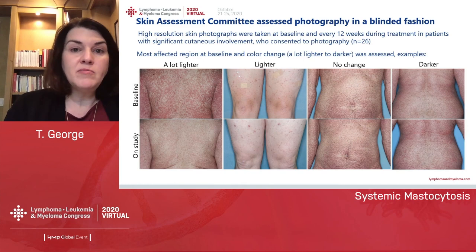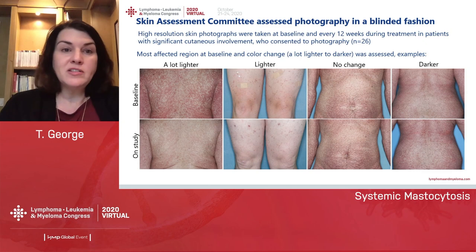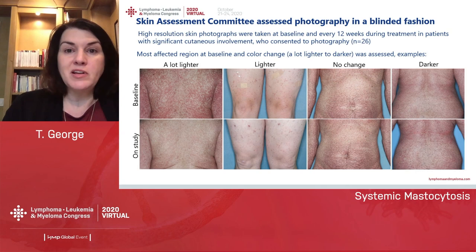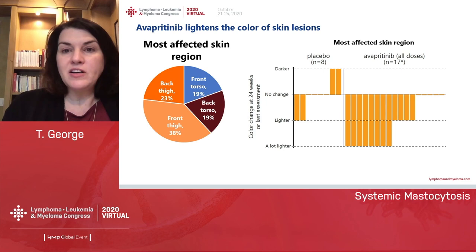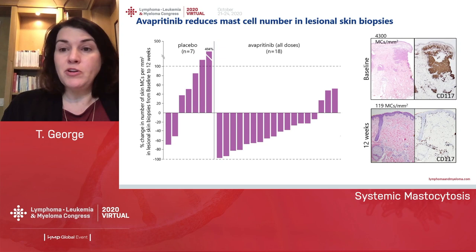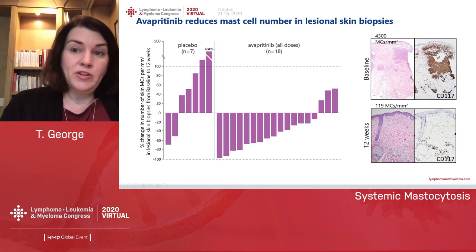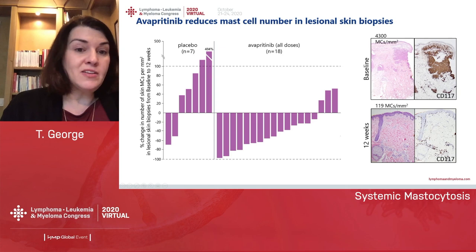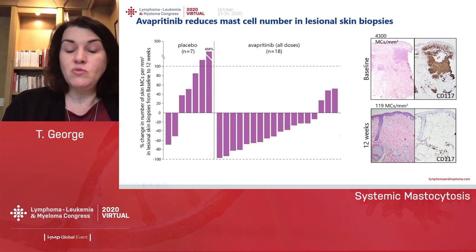We also looked at photography in patients who had mastocytosis skin lesions. Baseline images are shown at top and on-study images at bottom from a variety of patients, with high-resolution skin photographs reviewed by a blinded skin assessment committee with detailed image analysis. This data shows that avapritinib lightens the color of skin lesions. We also examined skin biopsies from lesional and non-lesional skin. The CD117 (KIT) stain at baseline showed dense mast cell infiltration, and after 12 weeks there was a marked reduction in mast cells in patients on avapritinib versus placebo.